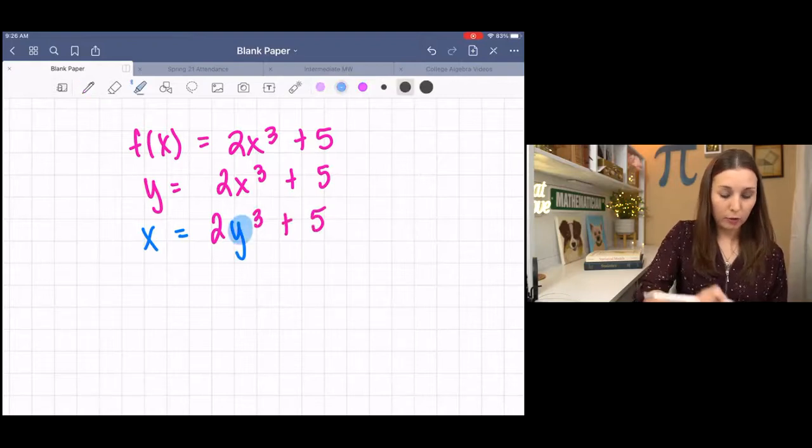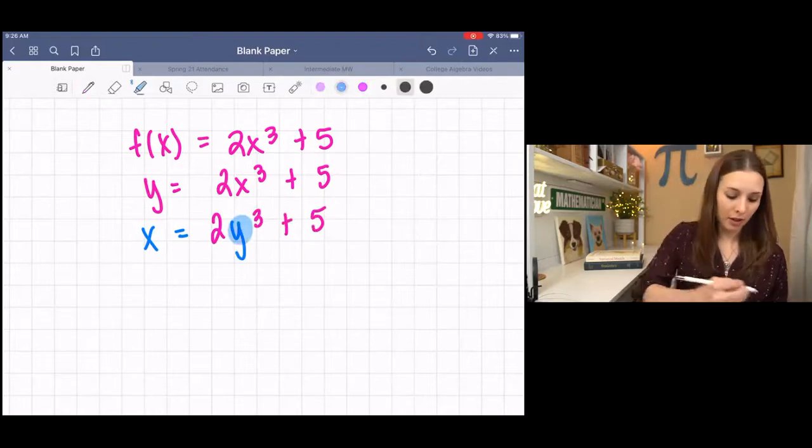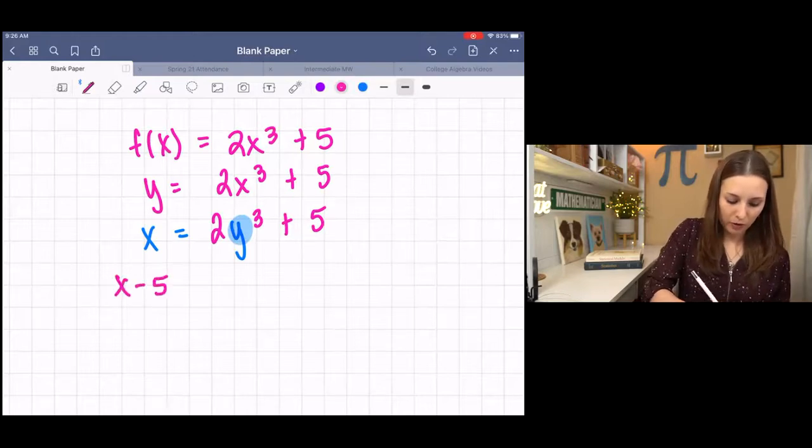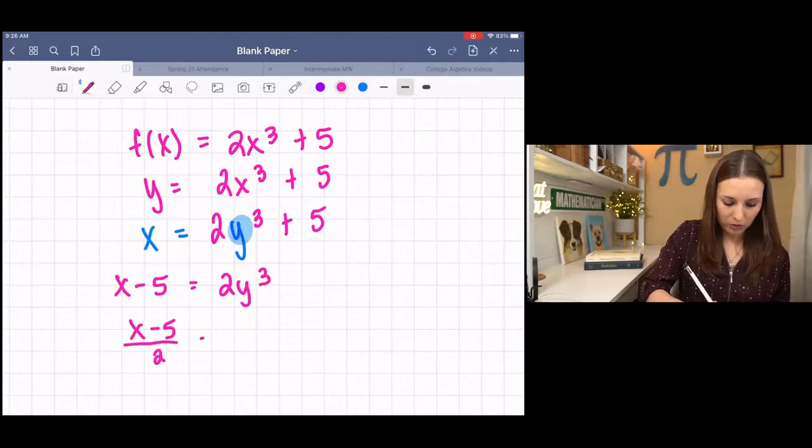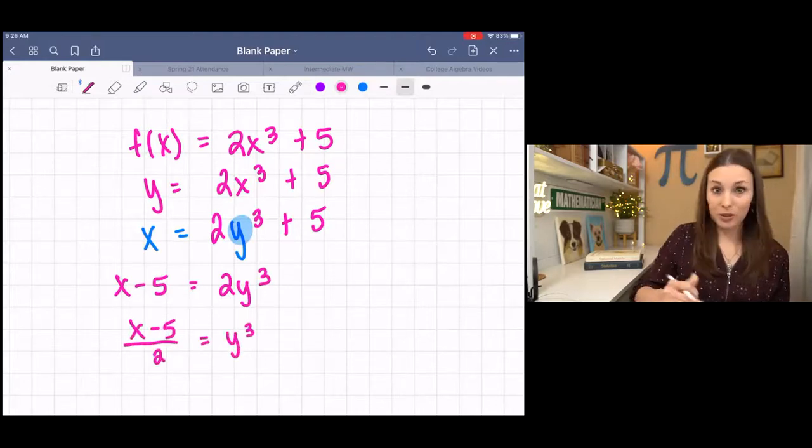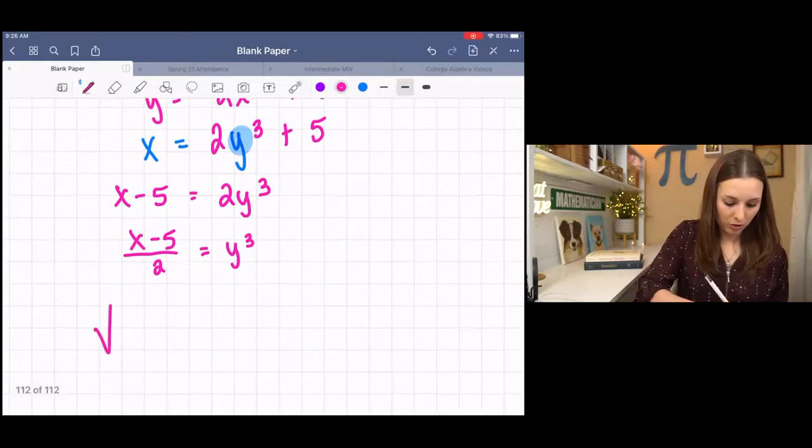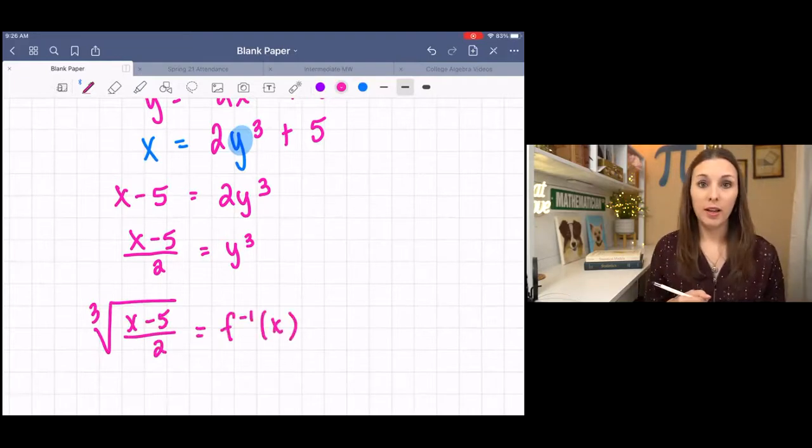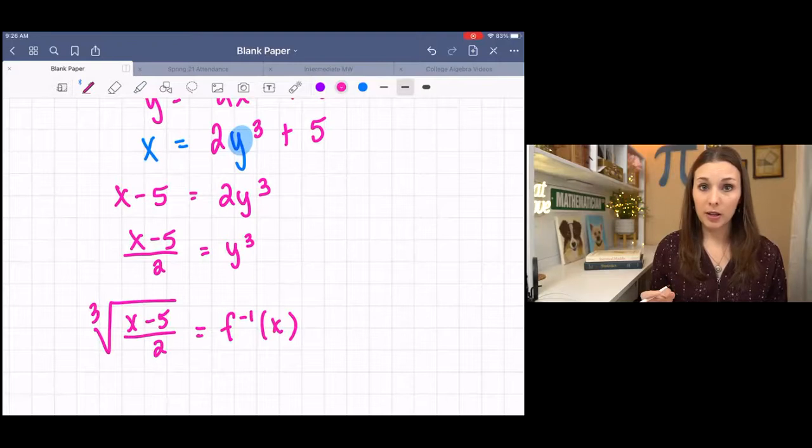And I'm solving for my new Y, which I would still subtract five, I would still divide by two, and I would still take the third root. So we get the same answer here, and this would be my inverse function. Either method is fine, you'll get the same answer, so you can just kind of choose which one you like better.